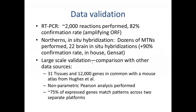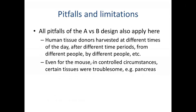To validate this data, we performed about 2,000 PCR reactions and confirmed 82% of expression observations by amplifying the entire open reading frame. We also performed northerns and in situ hybridization to validate a smaller number of expression profiles. As a large-scale validation, we compared our Affymetrix results with Tim Hughes' mouse atlas at the University of Toronto across 31 tissues and 12,000 genes in common, confirming about 75% of expressed genes matched across the two separate platforms.